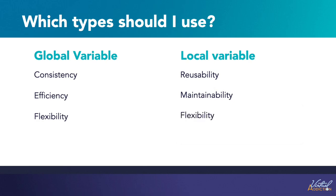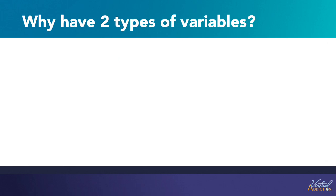Local variables can also provide more flexibility by allowing you to define styles specific to a particular context or state. For example, you might define a local variable for the background color of a button in its normal state, and then define a different local variable for the background color of the button in its hover state. Overall, local variables can be a powerful tool for making your CSS code more modular, maintainable, and flexible.